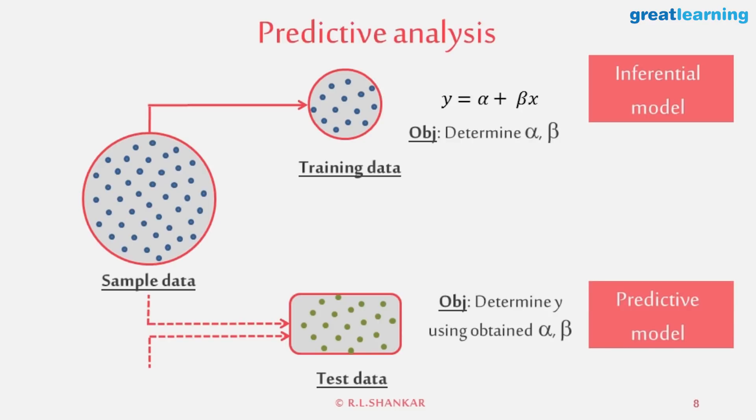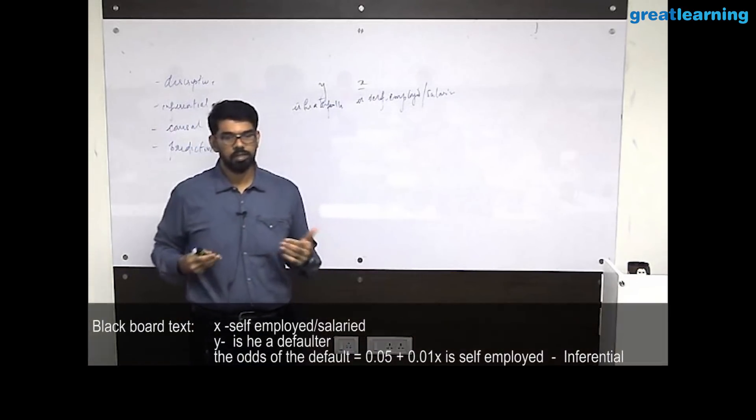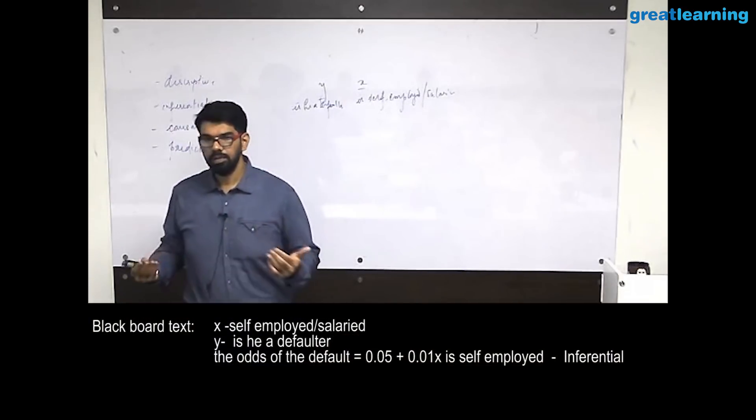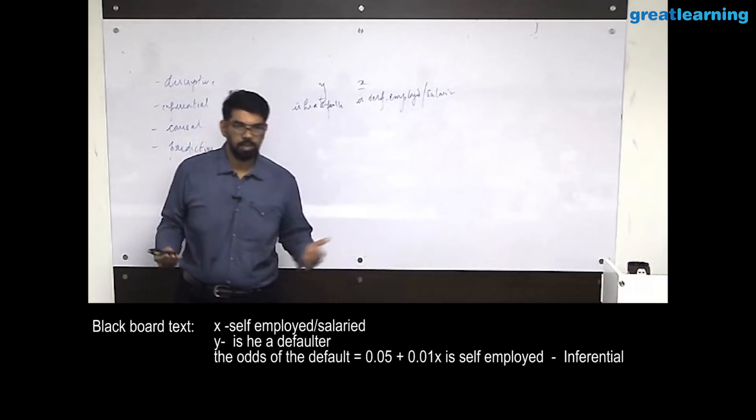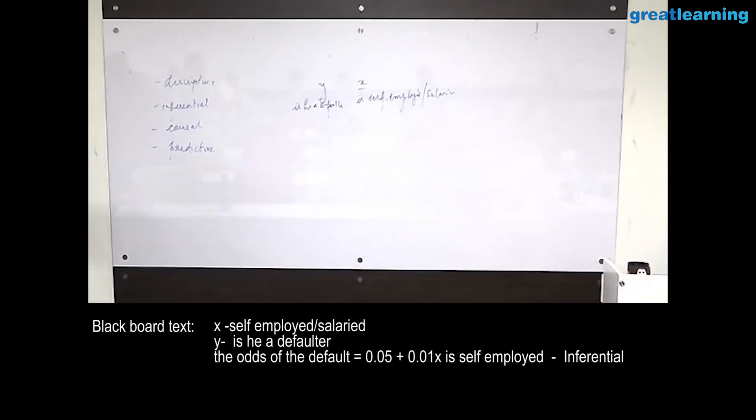I always try to explain this because people somehow are very excited or very nervous when you talk about predictive models, but they're very comfortable when you talk about inferential models. And the point is that you really ought not to be - both are exactly the same.